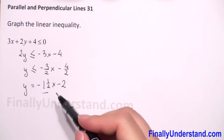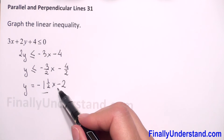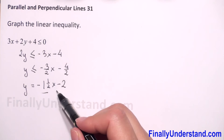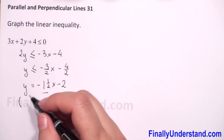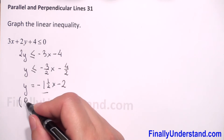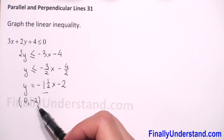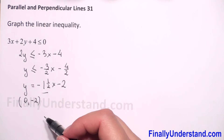And our constant number is negative 2, so the y-intercept point is (0, -2). So we have the y-intercept point. Now we have to find the x-intercept point.